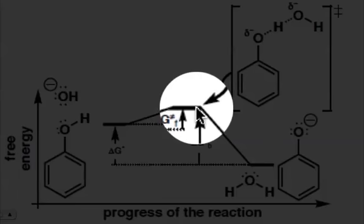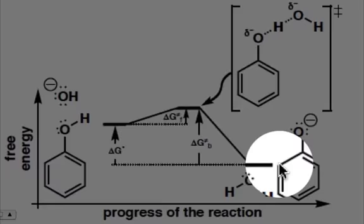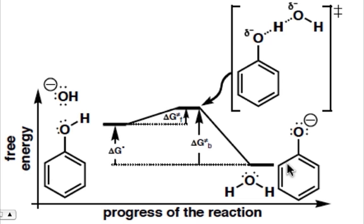And once we go over that maximum, we go downhill and reach our products at the bottom. And we now have our fully broken phenol OH bond and our fully formed hydroxide OH bond in our products.